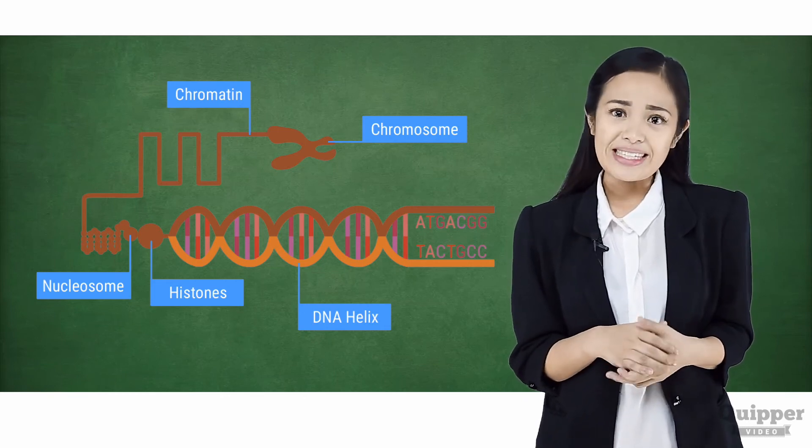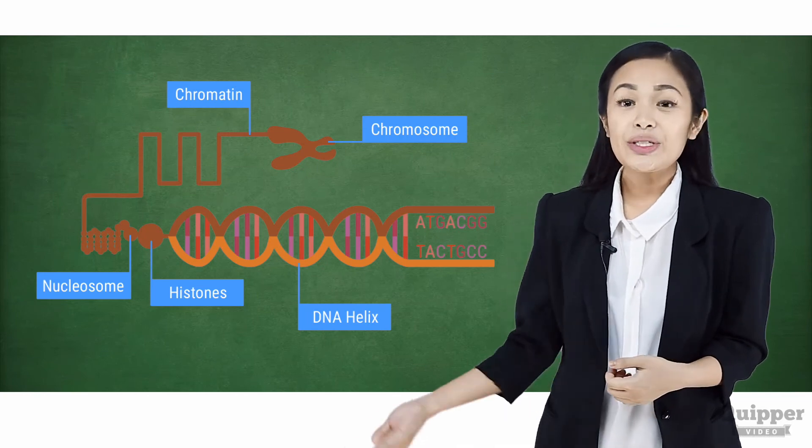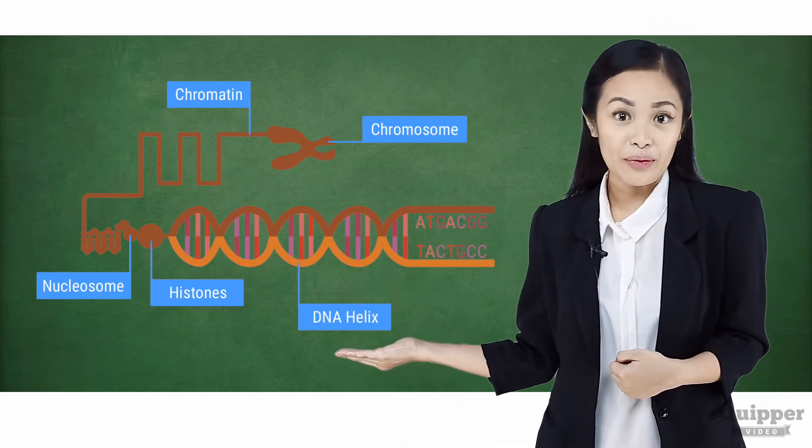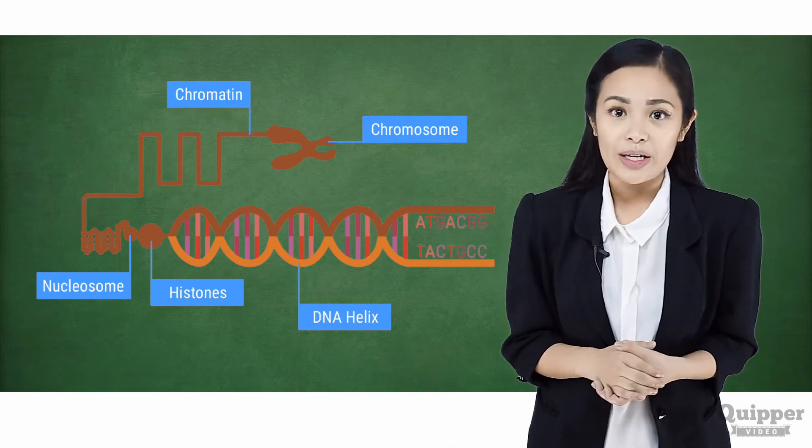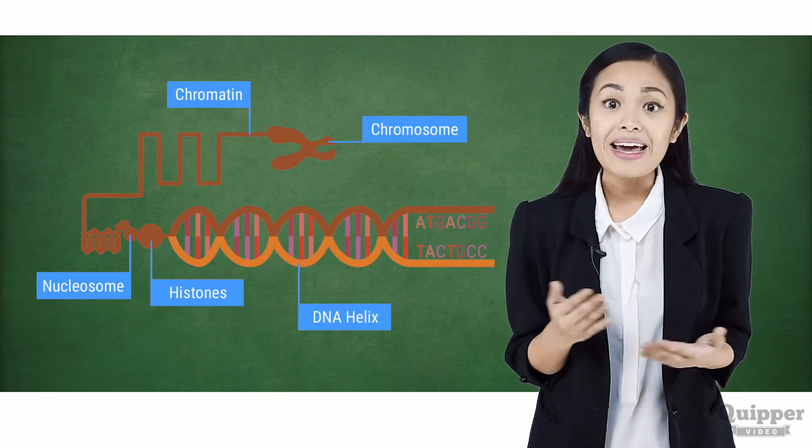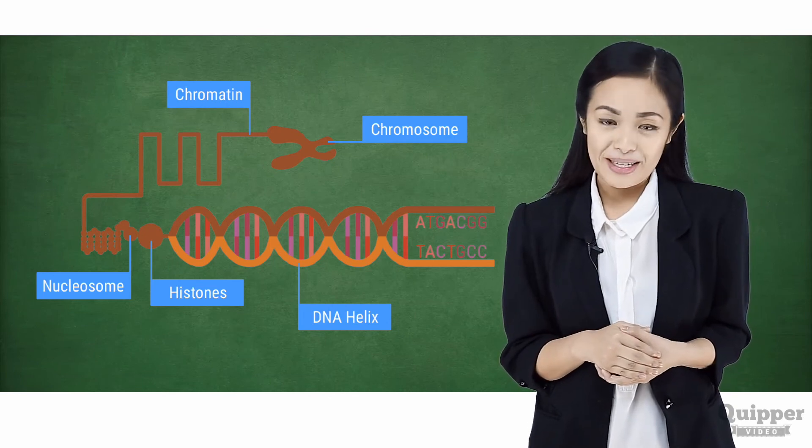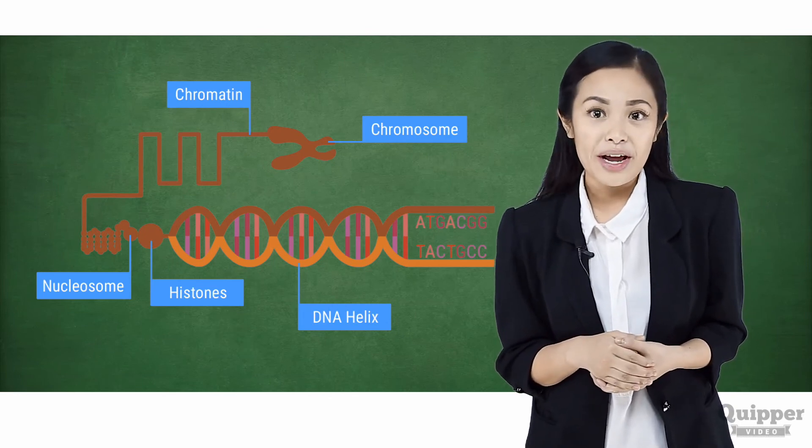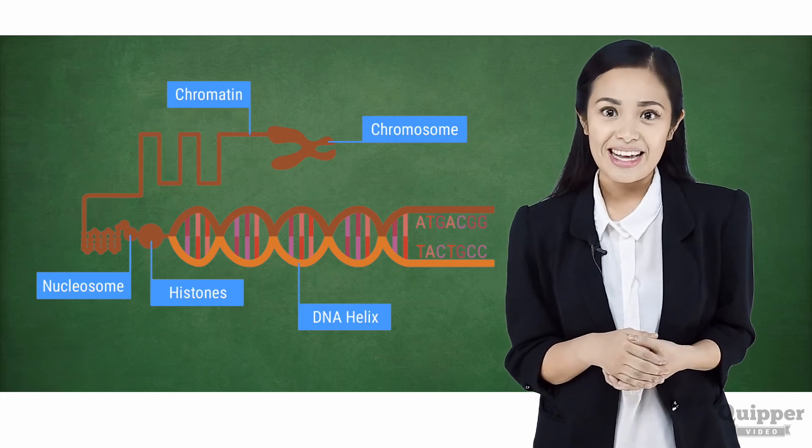Histones are proteins that bind DNA and are responsible for the packaging of DNA. Do you see here how a molecule of DNA wraps itself around histones? This forms a nucleosome, which is the building block of the thread formed by these wrapped DNA molecules. This thread is called the chromatin. The chromatin thread forms a coiled structure called chromosomes during cell division.